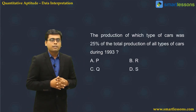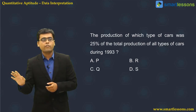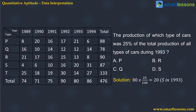Next question: the production of which type of car was 25% of the total production of all types of car during 1993? The total production in 1993 is 80. 25% of 80 is 20. Looking at the table, the production of type S in 1993 was 20. So type S was 25% of the total production in 1993. Option D is correct.